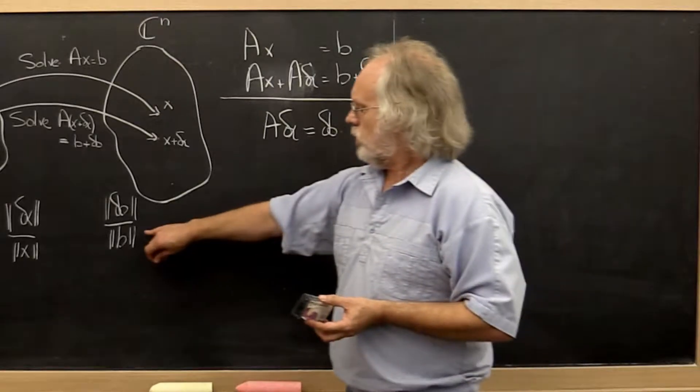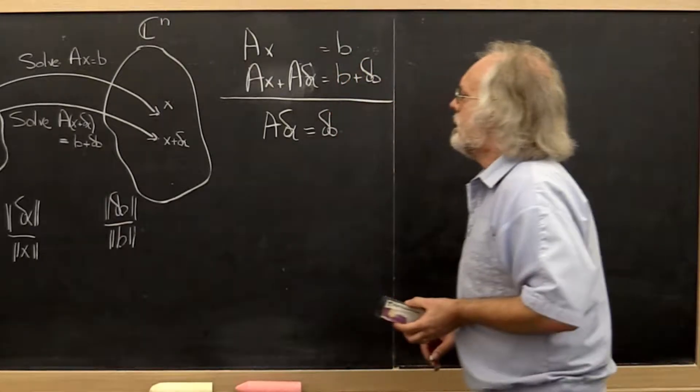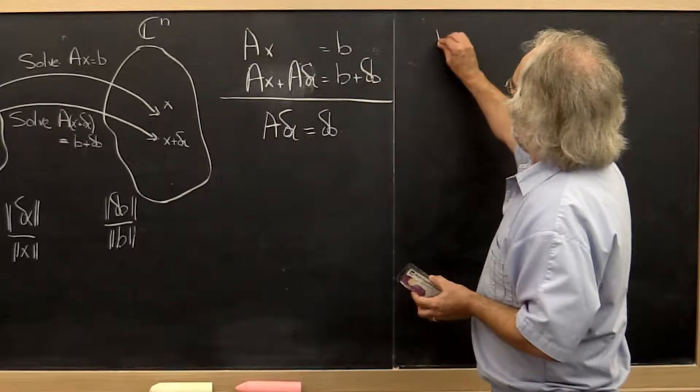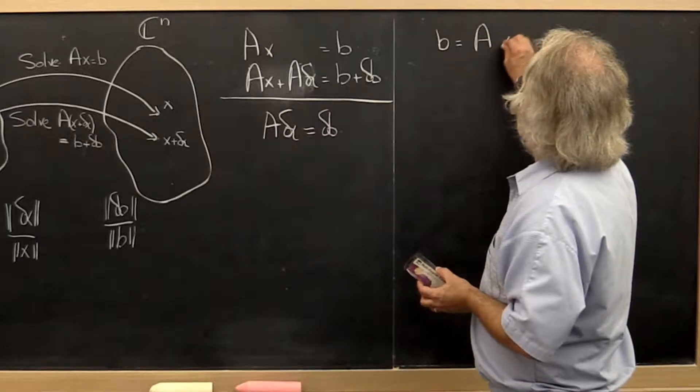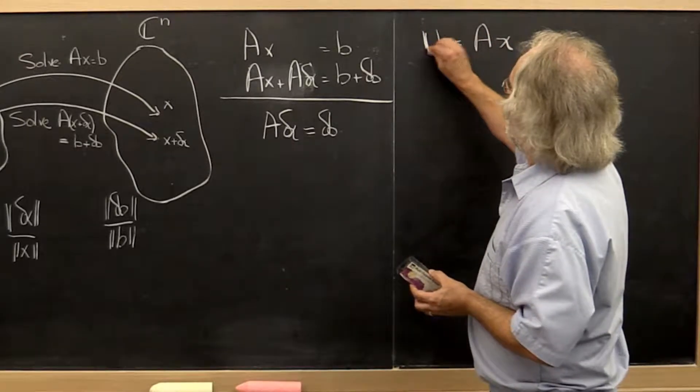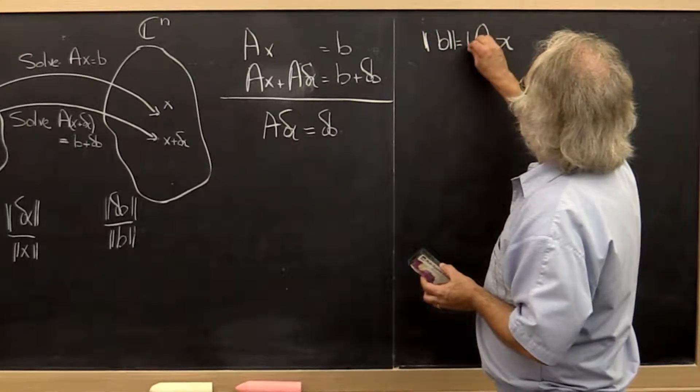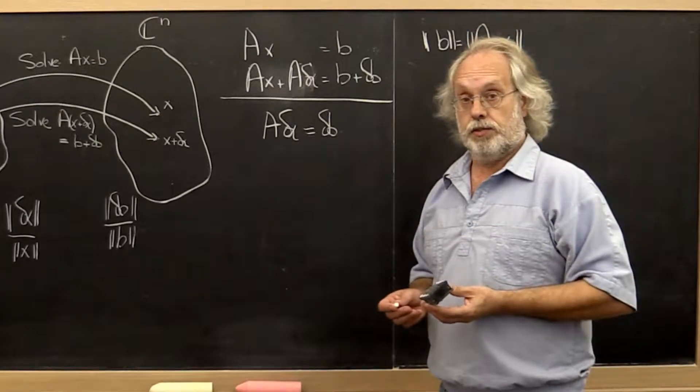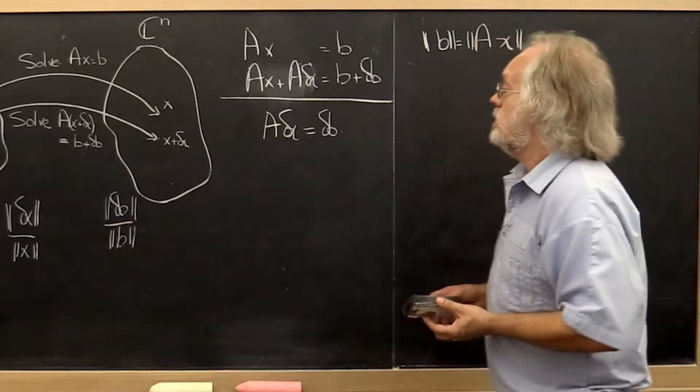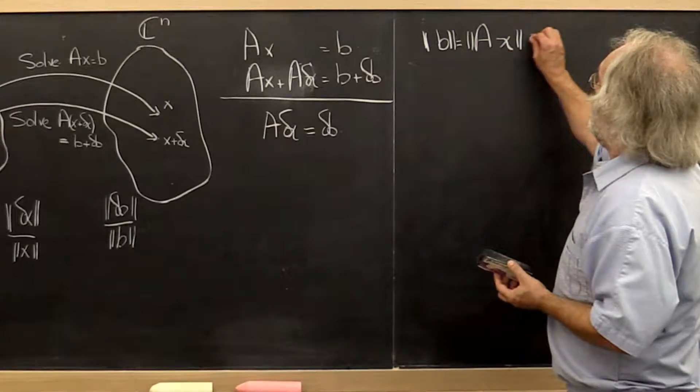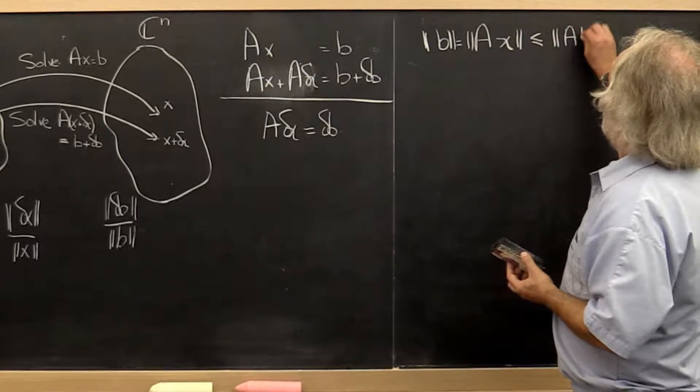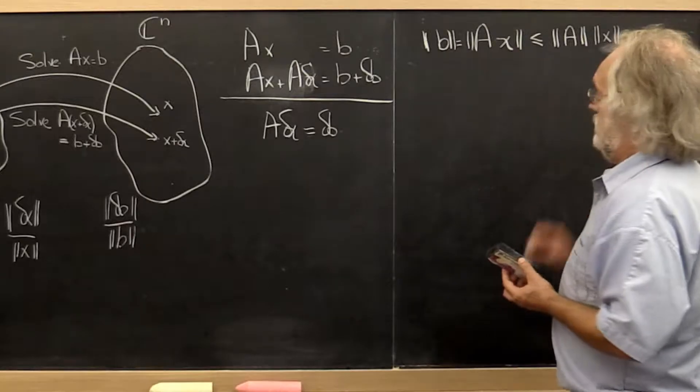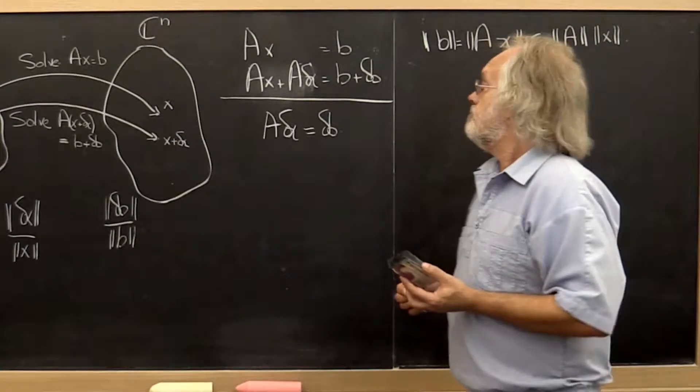Now we want to start taking some norms. To do that we start with this and rewrite it as B is equal to A times x, so that we can take the norm on both sides. Then if we used an induced matrix norm, we know that this is less than or equal to the norm of A times the norm of x.